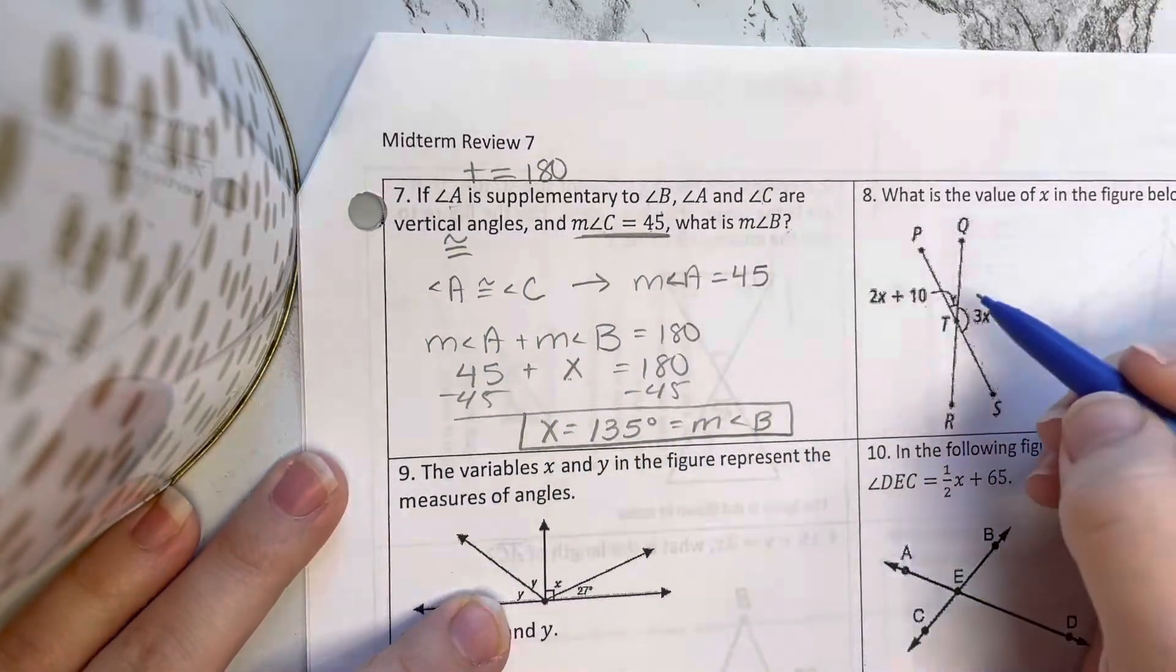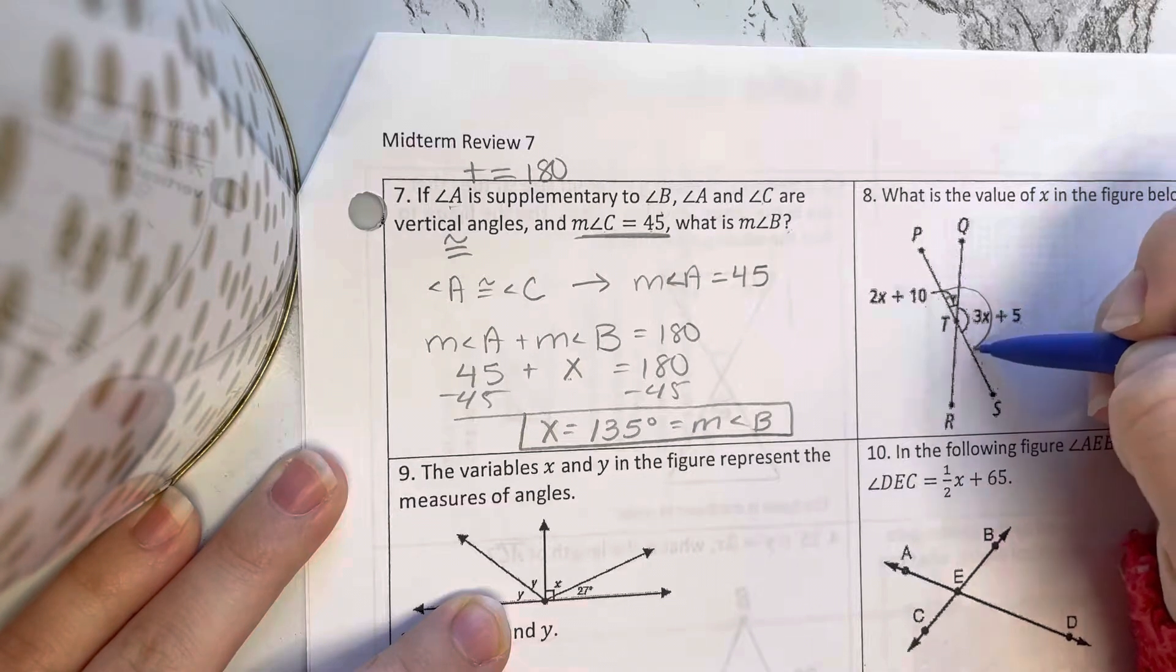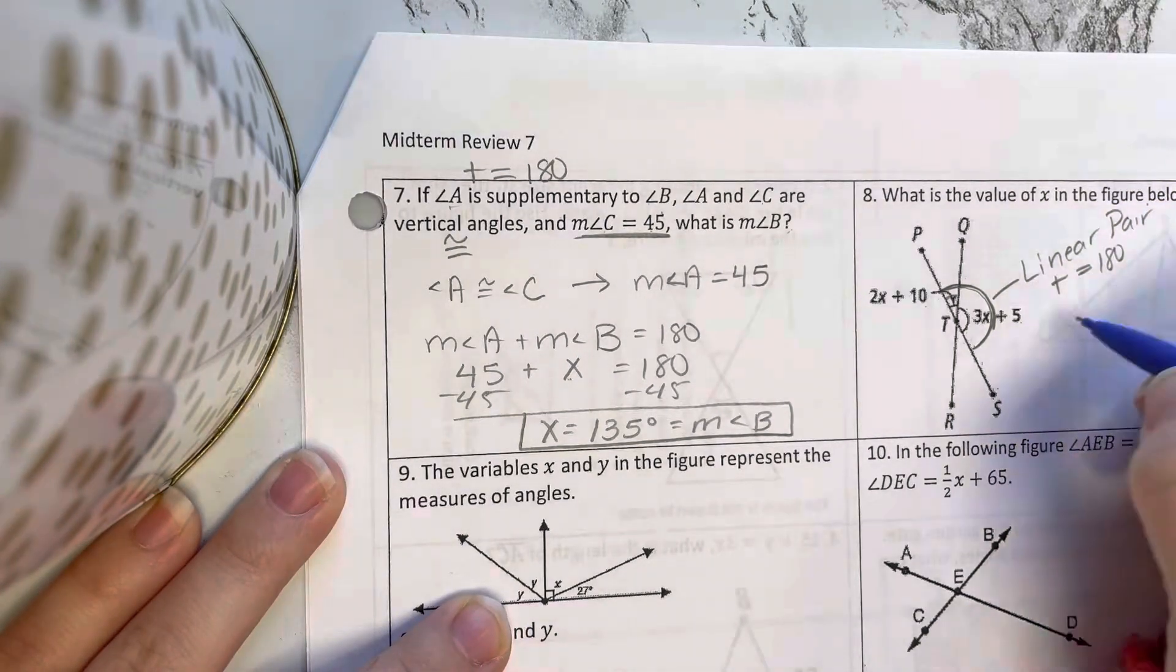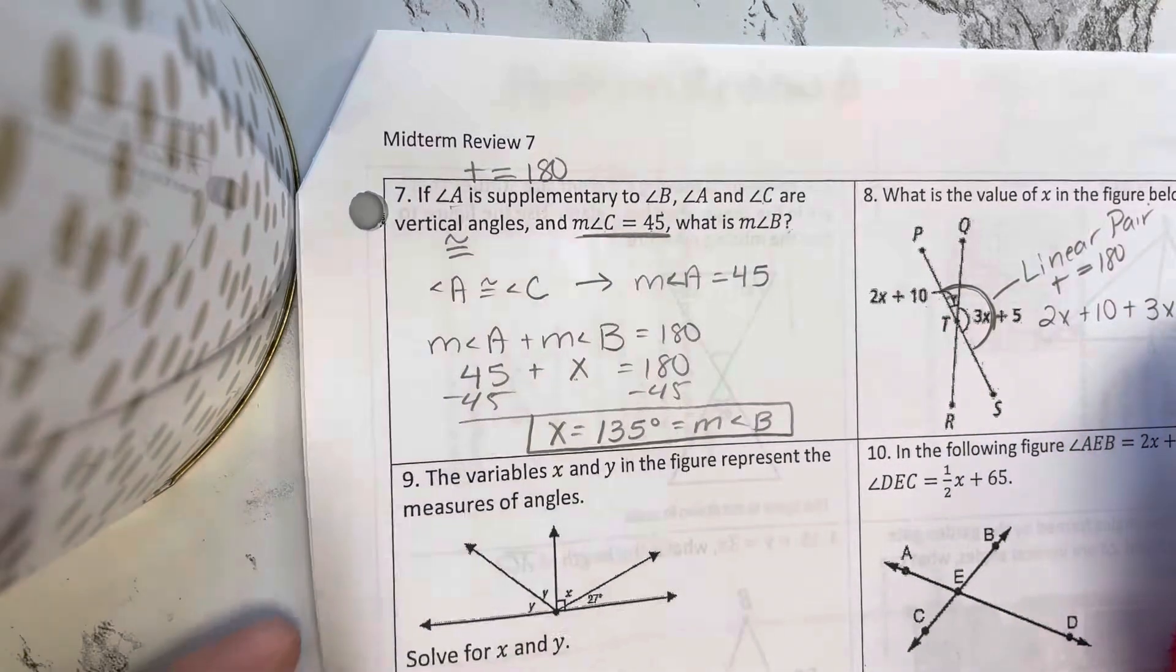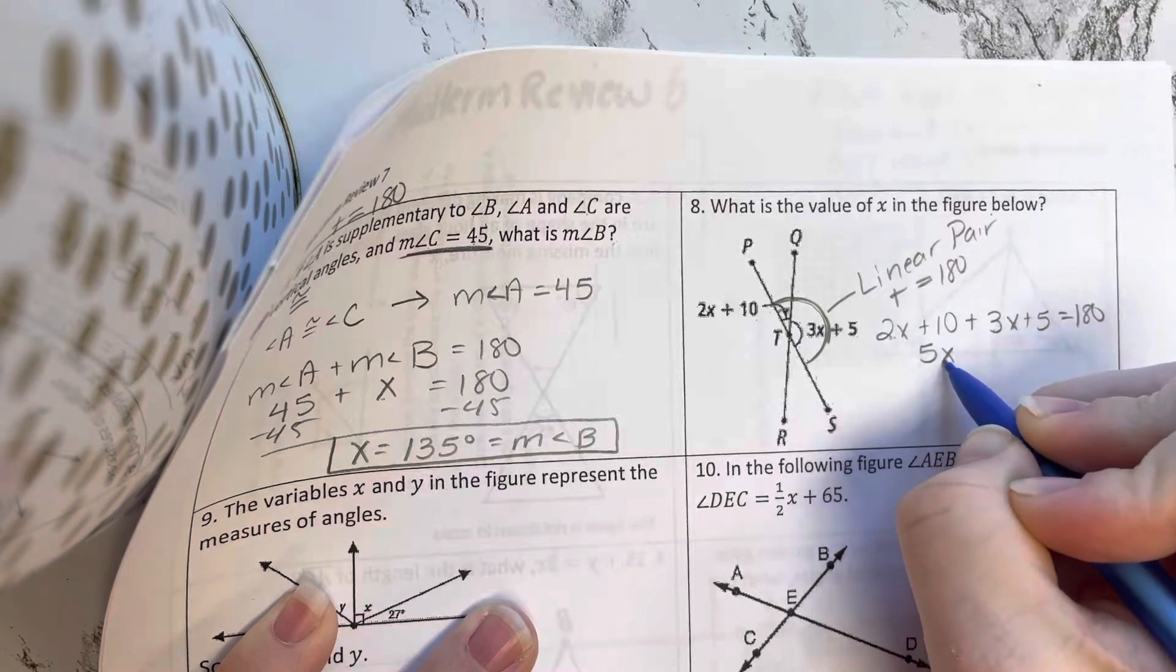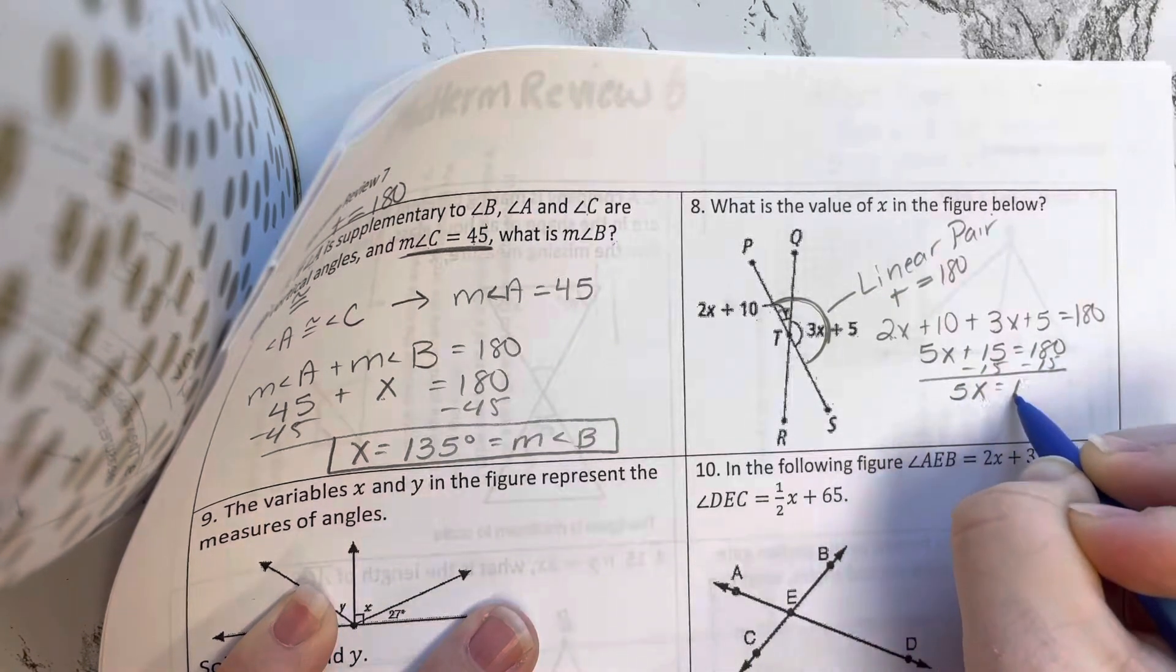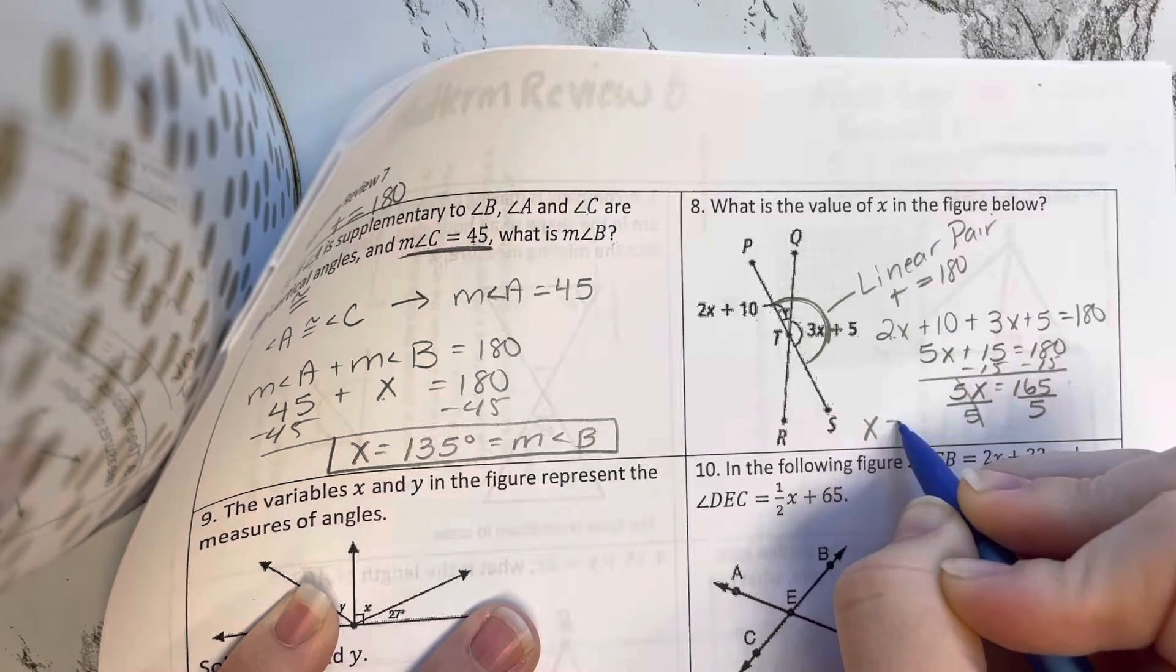What is the value of X in the figure below? Well, this part is 2X plus 10. This part here is 3X plus 5. Together here is a linear pair. Linear pairs add up to equal 180. So 2X plus 10 plus 3X plus 5 equals 180. Combine your like terms. 2X plus 3X is 5X. 10 plus 5 is 15. Subtract 15. So 5X equals 165. Divide by 5. So X equals 33.